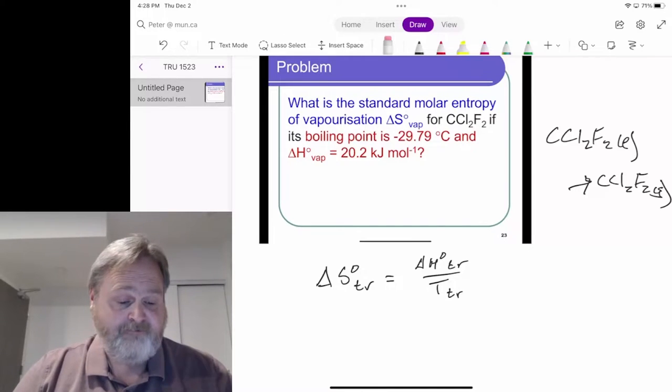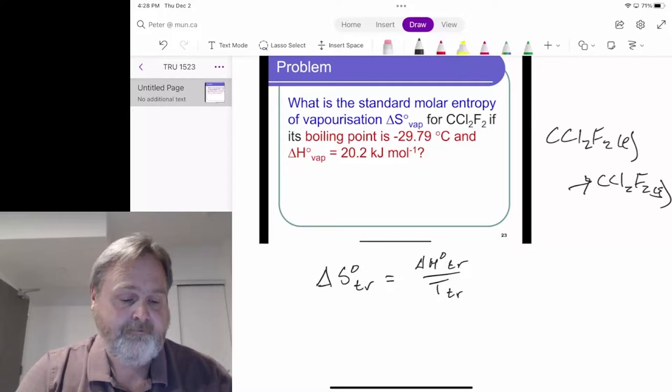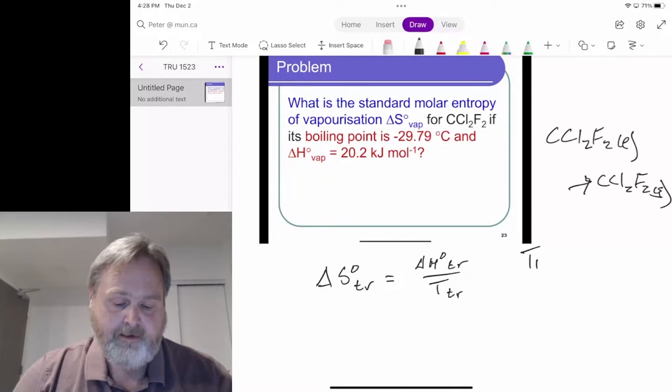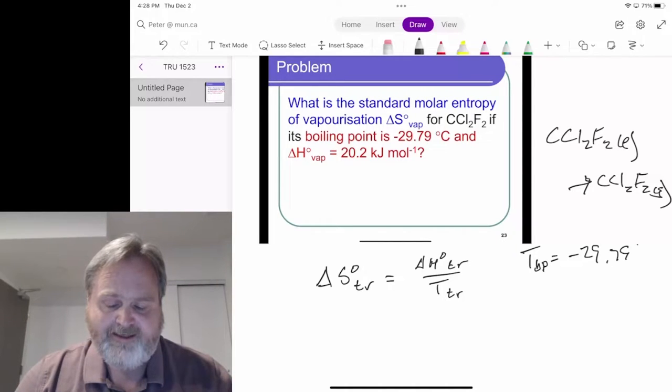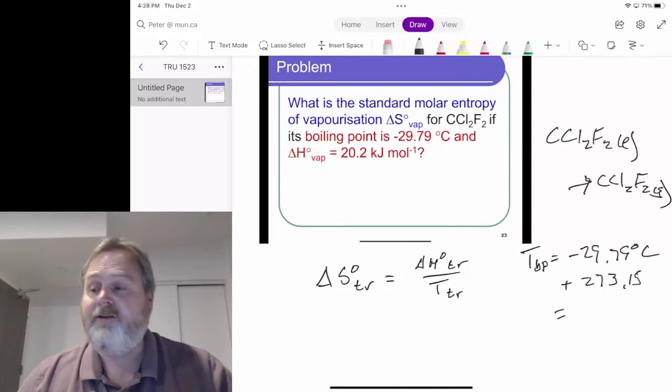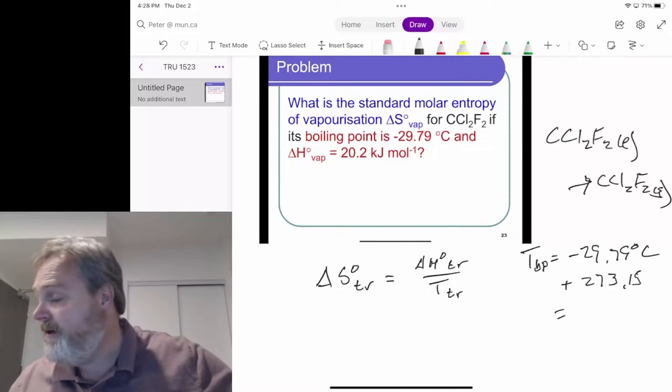The first thing we need to realize is that the boiling point temperature is -29.79 degrees Celsius, where we have to add 273.15 to convert that to Kelvin. That's what we need to make this work.